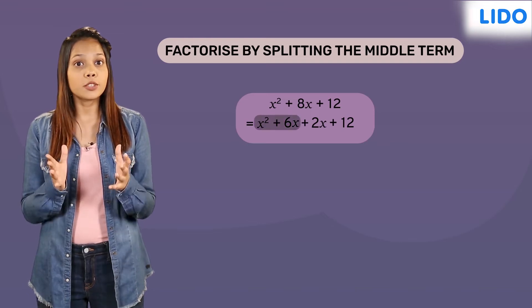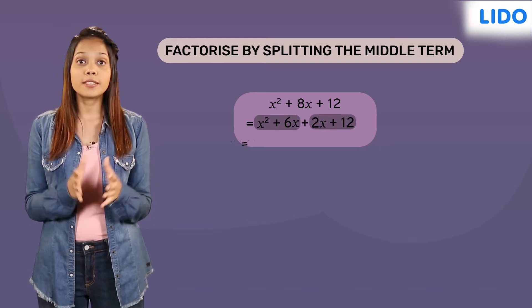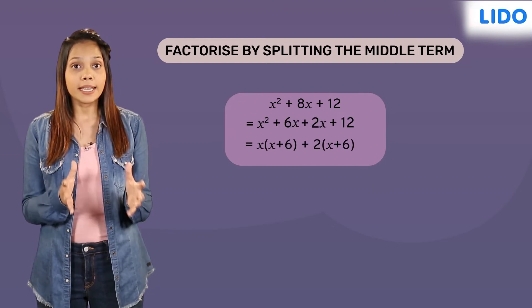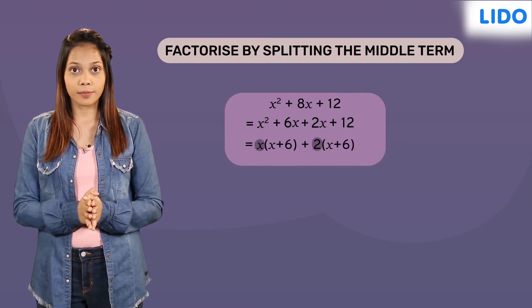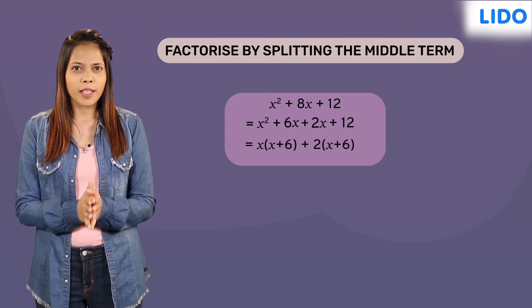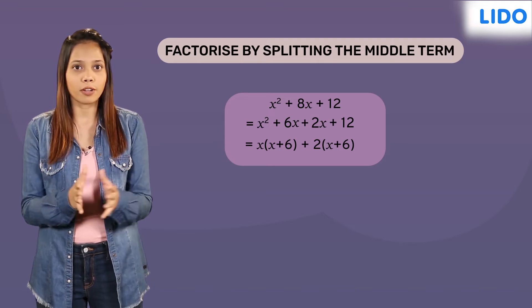Then, we will group the first two terms and the last two terms. In the next step, we will factorise the first group and the second group individually by taking out common factors. You should be able to find common terms in both groups. If you can't find anything in common, then there is a chance that you may have gone wrong.